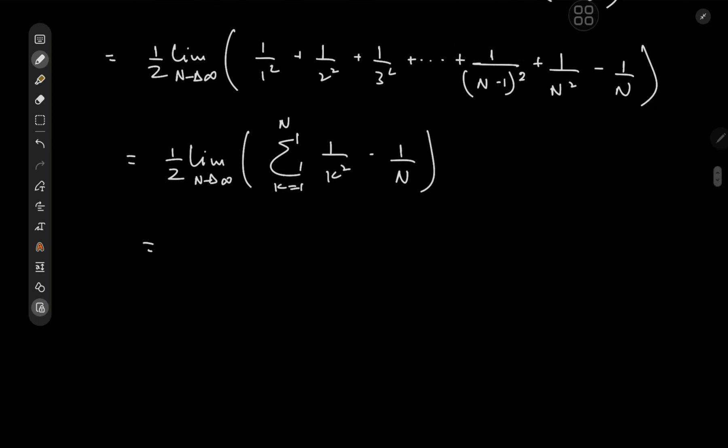Now applying the limit here, the limit of 1 over n as n goes to infinity is, of course, 0, and we're left with 1 half the sum over k from 1 to infinity. So we have the sum over all the positive integers k of 1 over k squared, which, of course, we recognize as the famous Basel problem. And we know that this thing equals pi squared over 6, or zeta 2.